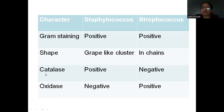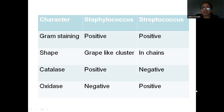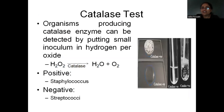While Staphylococcus gives catalase positive, Streptococcus gives catalase negative. Oxidase is just the reverse: Staphylococcus is negative and Streptococcus is positive. This is an important slide — it mentions two tests to differentiate between Staphylococcus and Streptococcus genus.